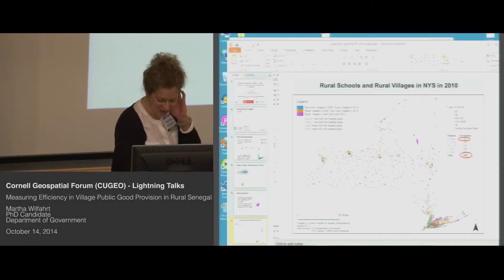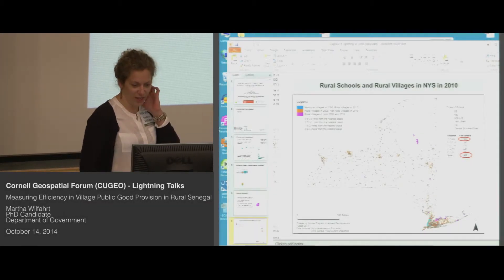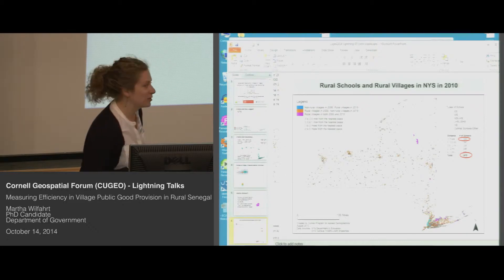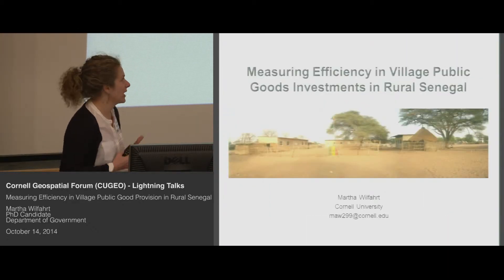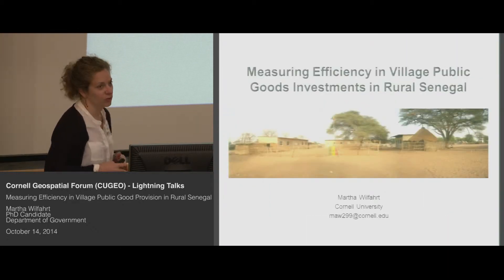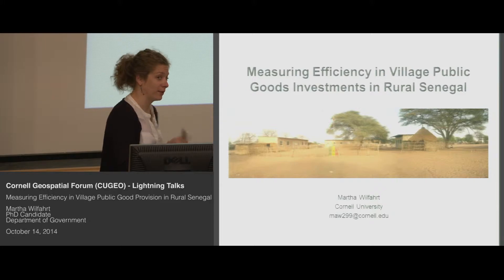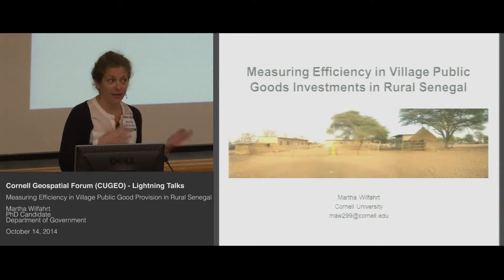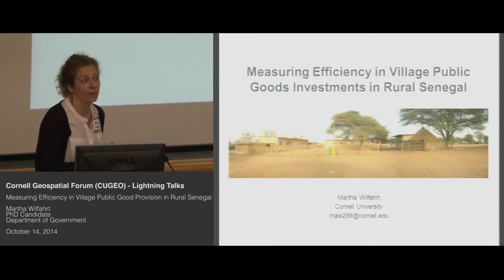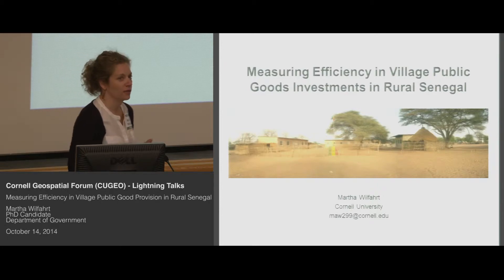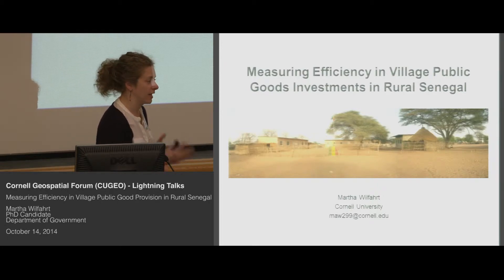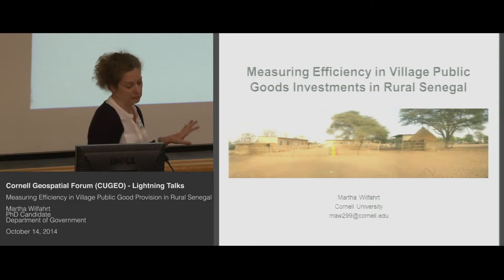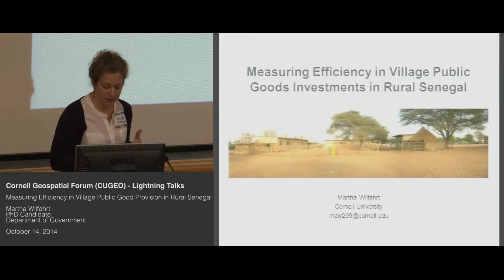Hi, I'm Martha Wilford. I am a PhD candidate in the government department here at Cornell, and I'm going to be talking about one of the many ways that I use GIS in my dissertation, which looks at patterns of village-level public goods investments in rural Senegal. By public goods in my dissertation I'm specifically talking about primary schools, basic health care facilities, and clean water infrastructure, although in this talk I'm going to limit my discussion to primary schools.